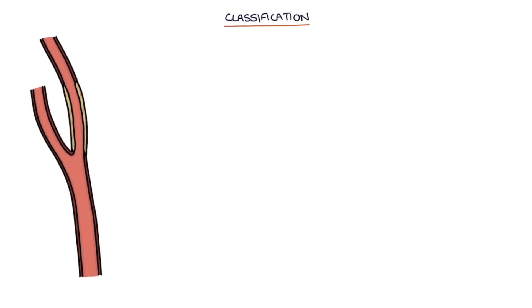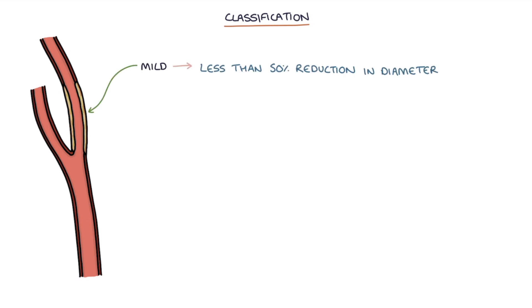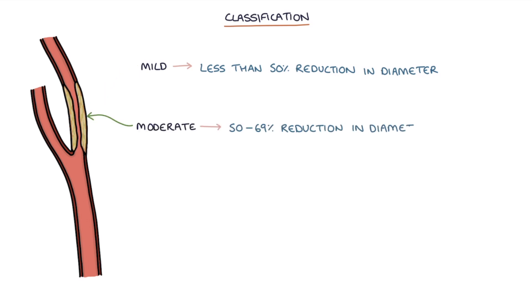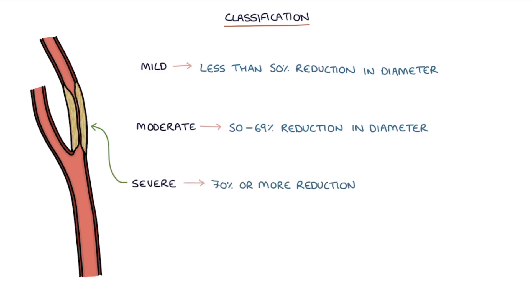Let's talk about the classification. The severity of carotid artery stenosis is categorized as mild when there's less than a 50% reduction in diameter, moderate when there's a 50 to 69% reduction in diameter, and severe when there's a 70% or more reduction in diameter.